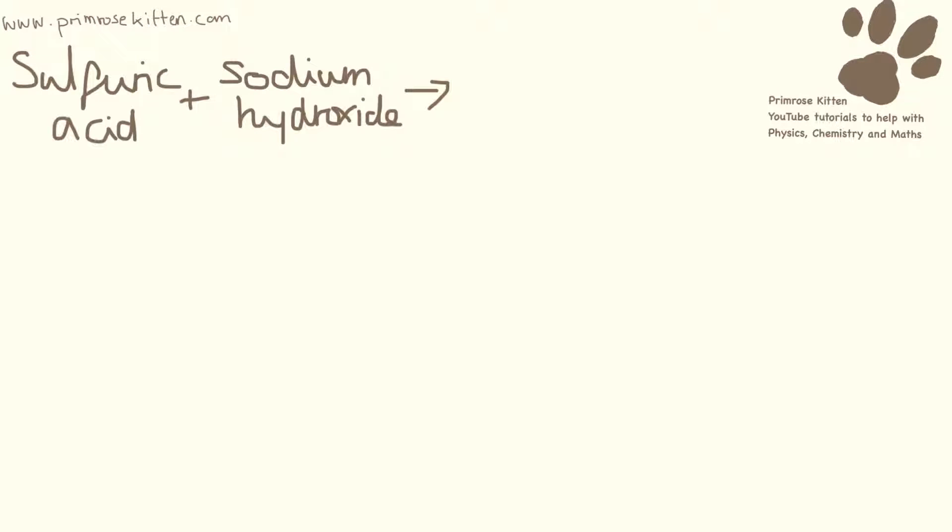If we have sulfuric acid and sodium hydroxide, we are again going to get a salt and water. The name of the salt is going to take the metal first. So again that metal is sodium. And sulfuric acid always forms metal sulfates as our salt. So that is sodium sulfate plus water.